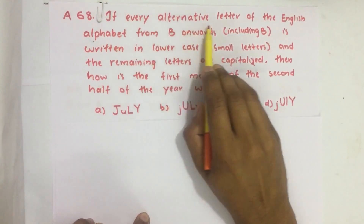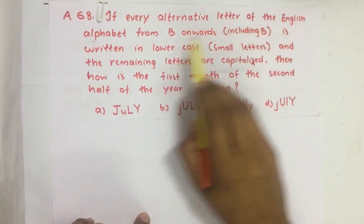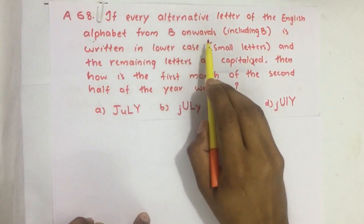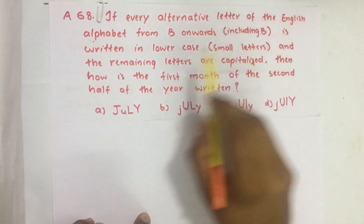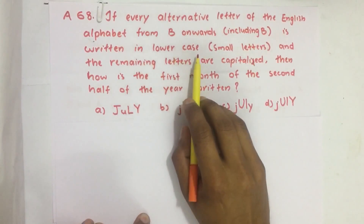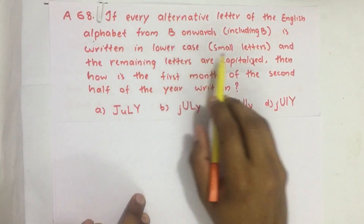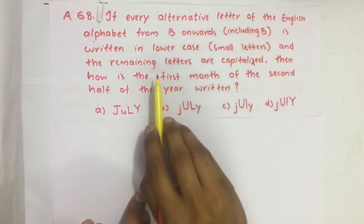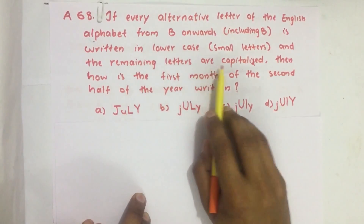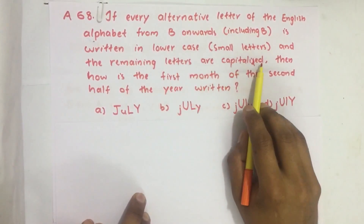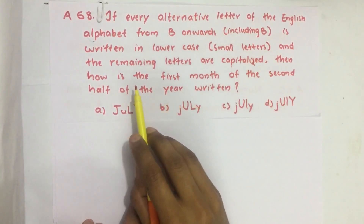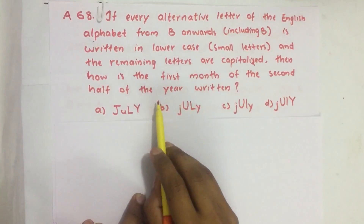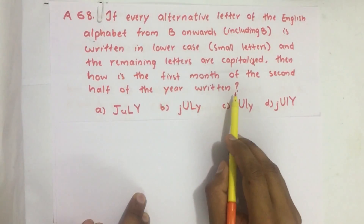If every alternative letter of the English alphabet from B onwards, including B, is written in lowercase (small letters) and the remaining letters are capitalized, then how is the first month of the second half of the year written?